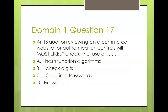Question seventeen: auditing an e-commerce website for authentication controls, you would most likely check the use of hash function algorithms, check digits, one-time passwords, or firewalls. Authentication means being able to identify the initiator of a transaction. Hash function algorithms determine data integrity — whether data has been altered in transit. Check digits detect transposition errors. Firewalls control unwanted network traffic. The best answer is C — one-time password, because sending an OTP to the user's phone or email confirms they are the actual initiator of the transaction.